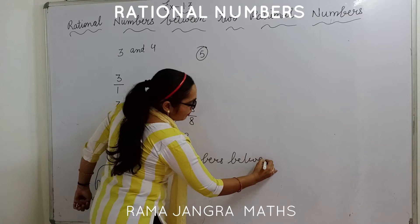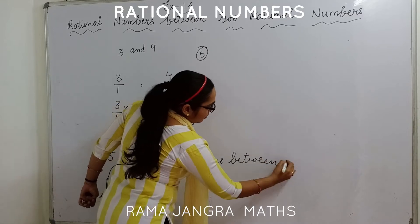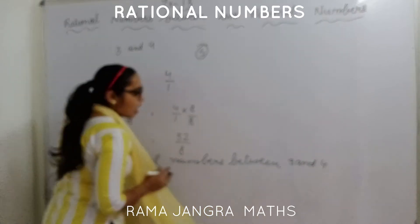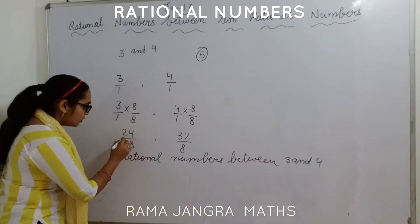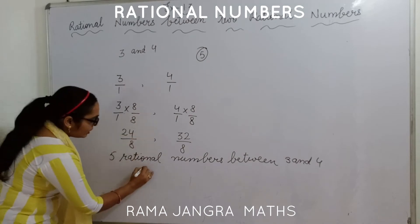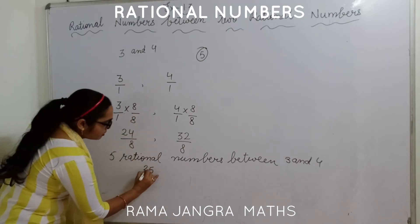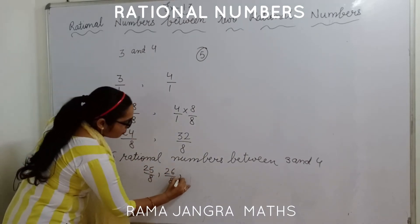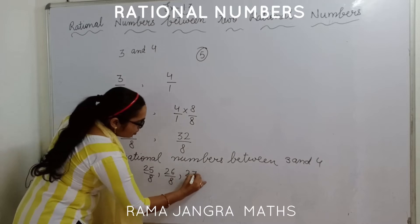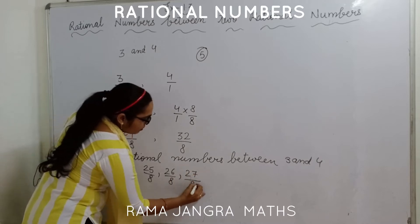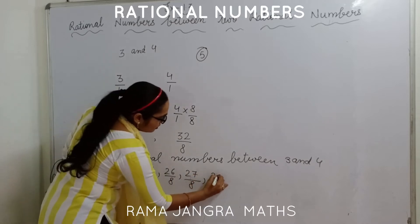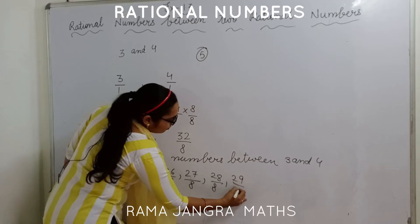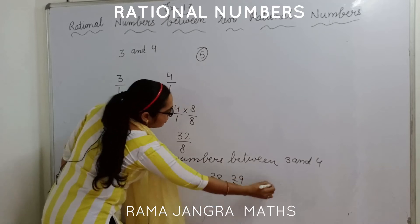So now write down the 5 rational numbers between 3 and 4: 25 by 8, 26 by 8, 27 by 8, 28 by 8, and 29 by 8.